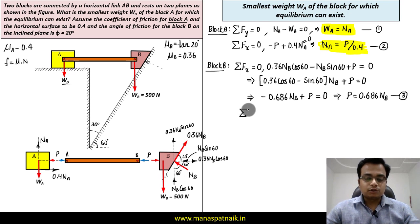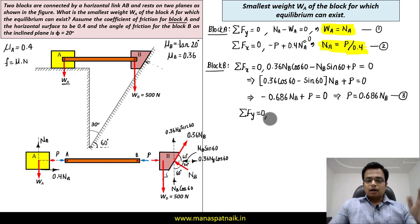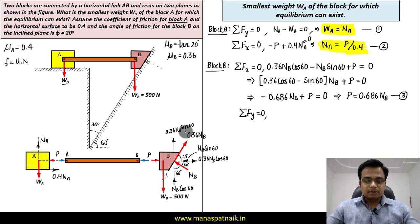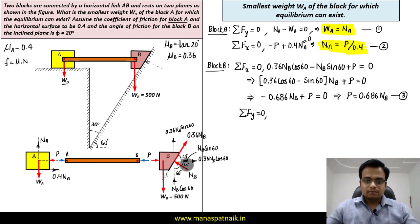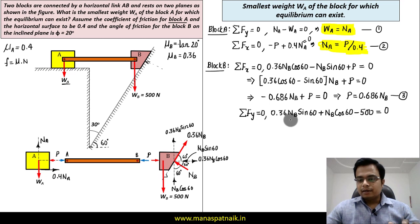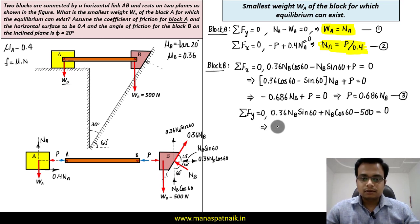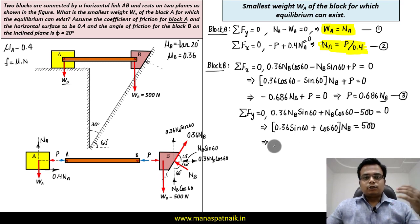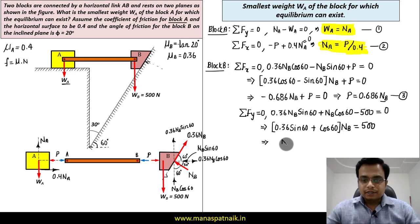The only remaining unknown is N_B, so we apply ΣF_y = 0 for block B: 0.36 N_B sin60° (upward, positive) plus N_B cos60° (upward, positive) minus W_B (downward, negative, equal to 500 N) equals zero. Taking N_B as common and moving −500 to the right-hand side, we can solve this equation. N_B works out to 615.94 N.